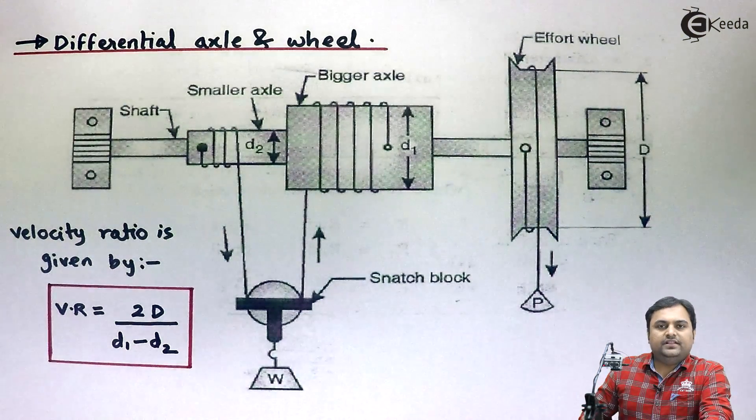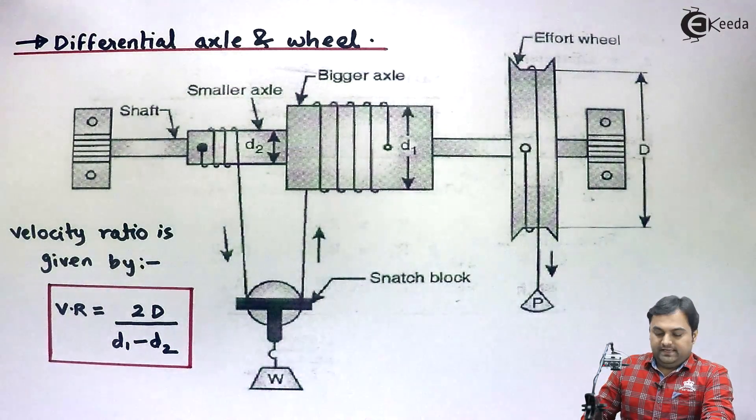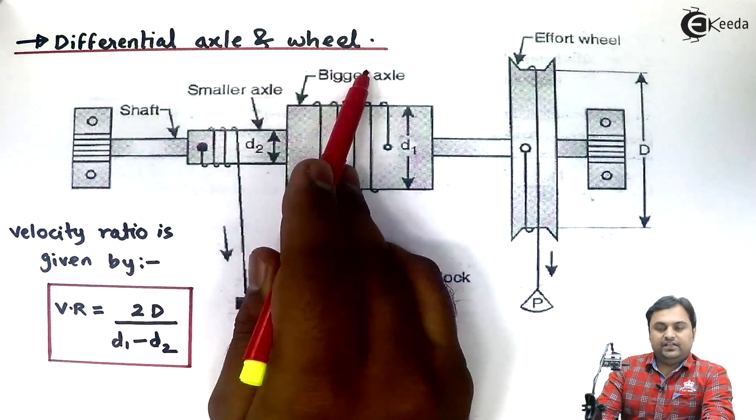Hello friends, in this video we will see another type of simple machine. The name of the machine is differential axle and wheel.